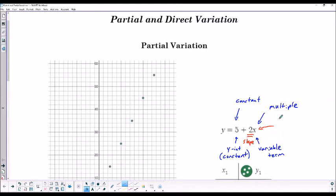So partial variation will have two parts to the equation. We're going to have a constant added to a multiple part. That's one way to identify partial variation.